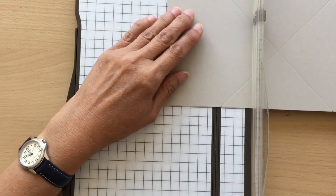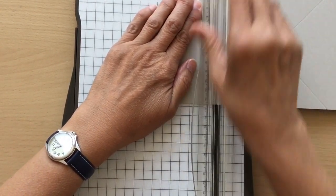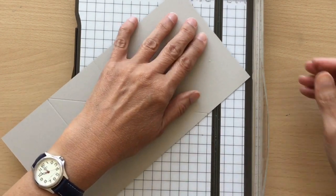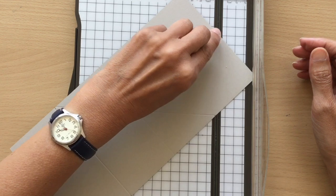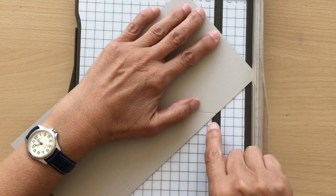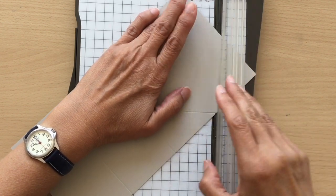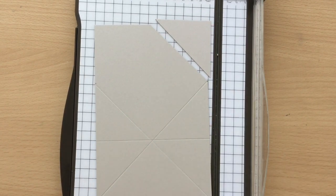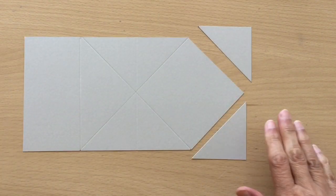On the opposite end we're going to go to two and a half inches and score. Now on the end where we put the pencil line, we're going to line this up with our two and a half center point up there to our score line here, and this time we're going to cut. We're going to do the same on the other side. These pieces we can get rid of.